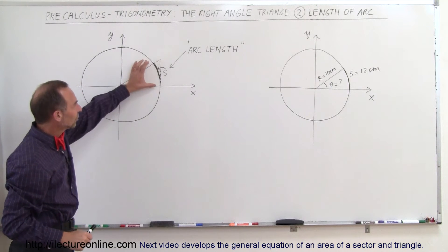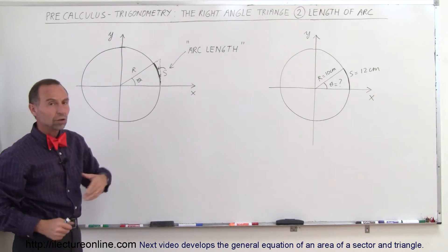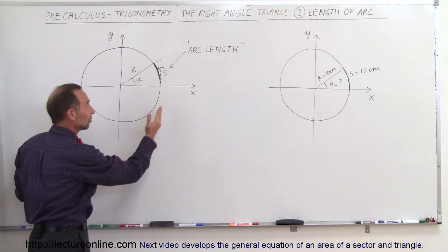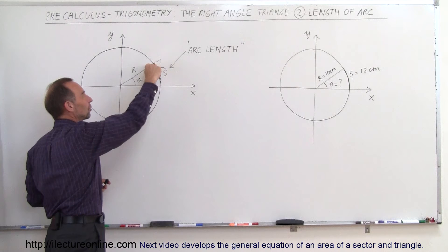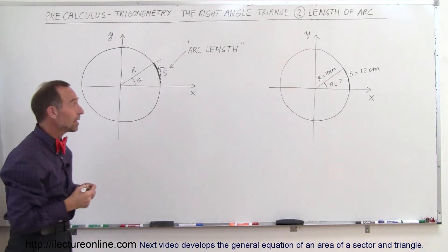So this S here, this distance along the circle, is called the arc length or the length of arc. This is considered an arc, and there's a relationship between S, the distance along the circle, the radius of the circle, and the angle of that triangle.